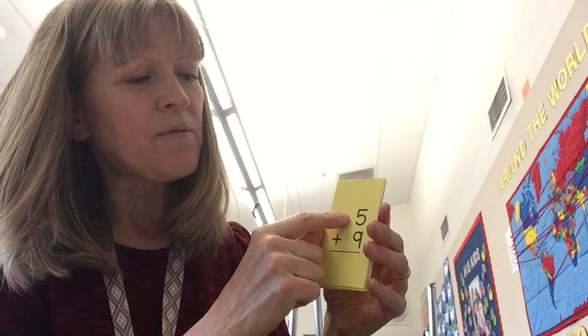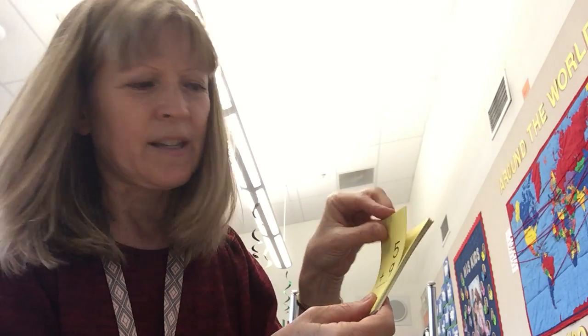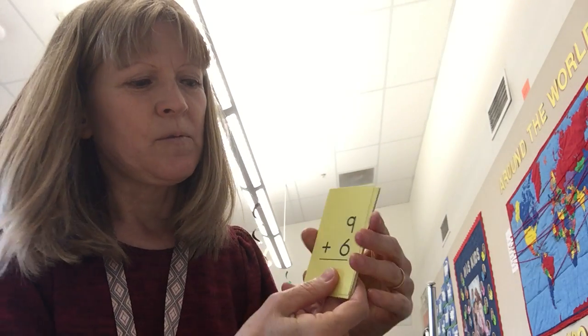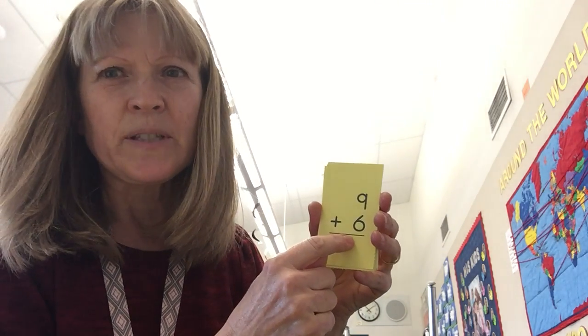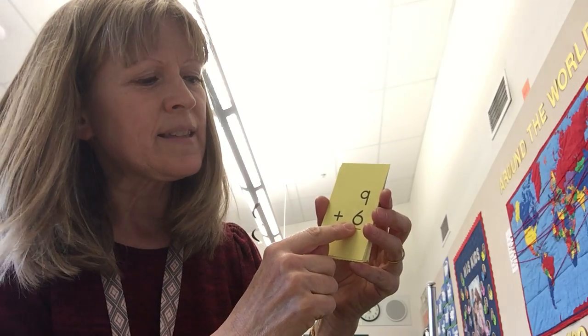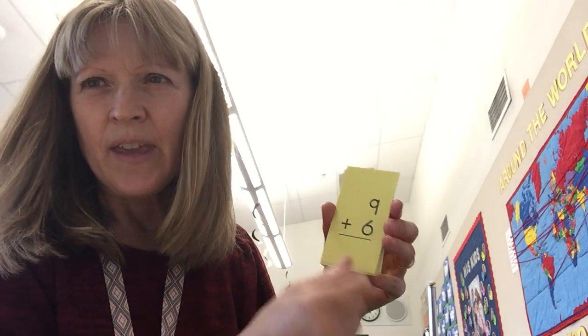One less than five is four. The answer is 14. Now I have to look down here because the other number is down here. One less than six is five. The answer is 15.